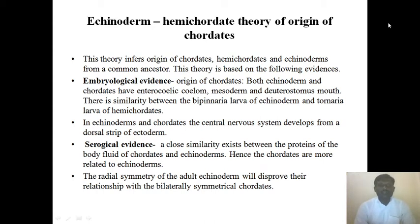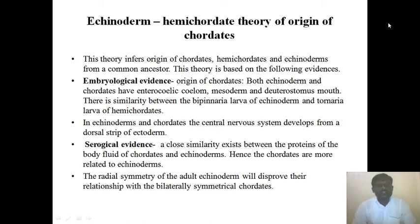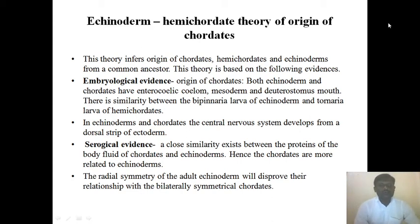In both echinoderms and chordates, the central nervous system develops from the dorsal strip of the ectoderm. The serological evidence shows a close similarity between the proteins of the body fluids of chordates and echinoderms, indicating that chordates are more closely related to echinoderms. However, the radial symmetry of the adult echinoderm poses a challenge to their relationship with the bilaterally symmetrical chordates.